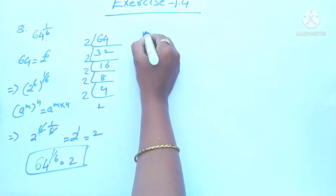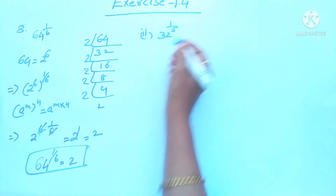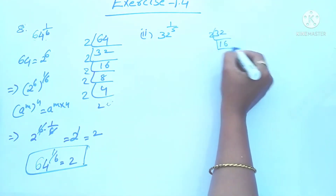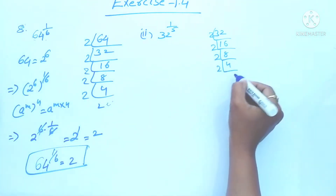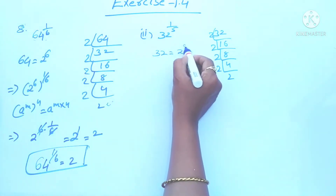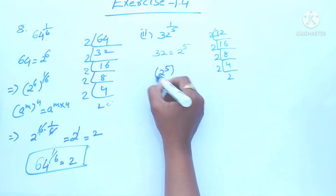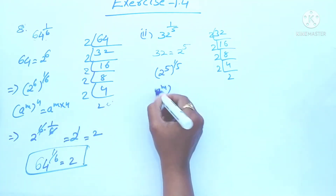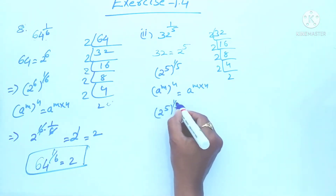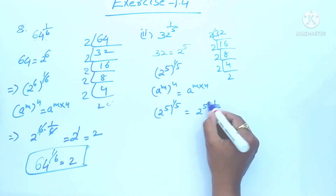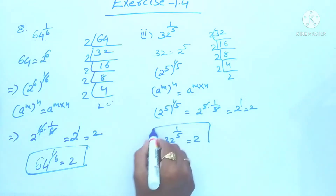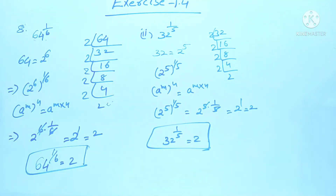For 32 to the power 1 by 5, we already know 32 equals 2 power 5. Dividing: 2 into 32 gives 16, 2 into 16 gives 8, 2 into 8 gives 4, 2 into 4 gives 2 — that's 1, 2, 3, 4, 5 factors. So 32 equals 2 power 5, and 2 power 5 whole power 1 by 5 equals 2 power 1, which is 2. So 32 to the power 1 by 5 equals 2.